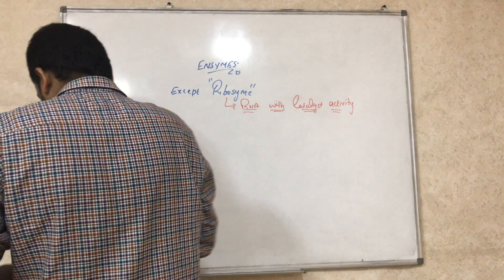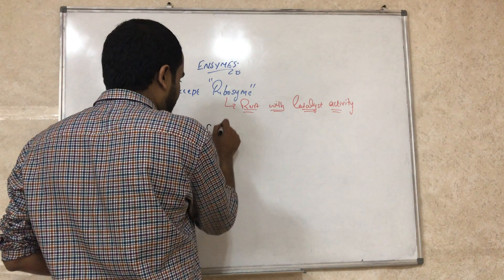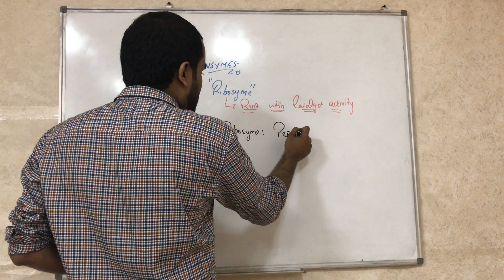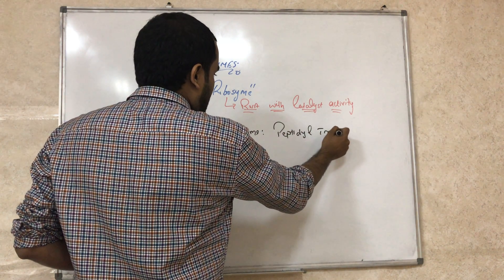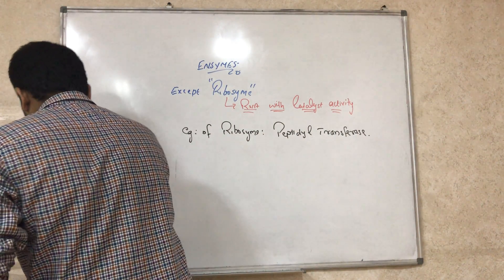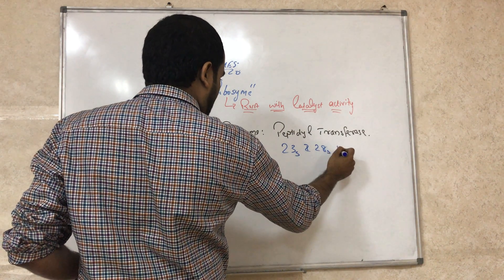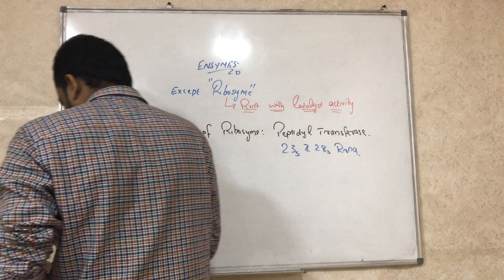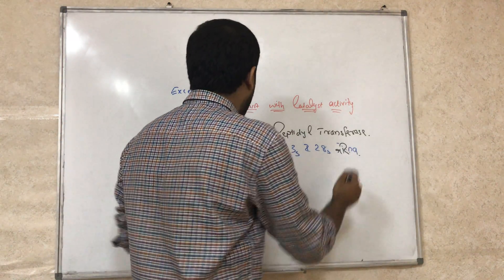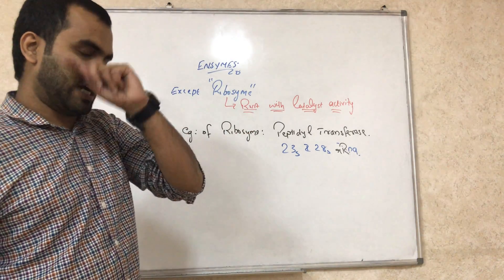The examples of ribozymes: one example is peptidyl transferase. It can be found in the 23S rRNA subunit or 28S rRNA. So remember — all enzymes are protein except ribozyme, and the example is peptidyl transferase.